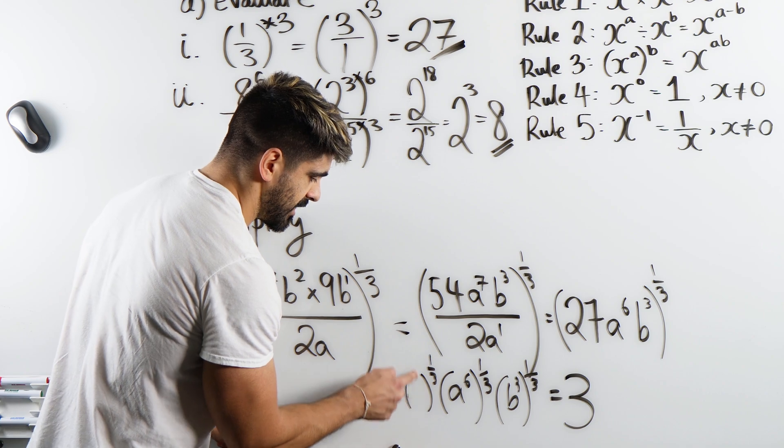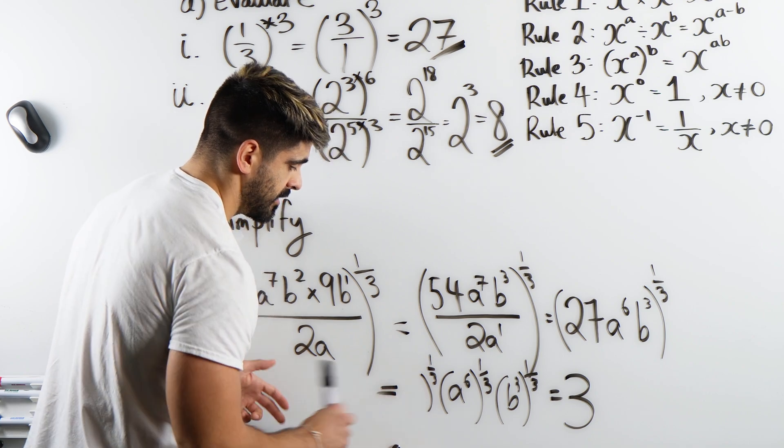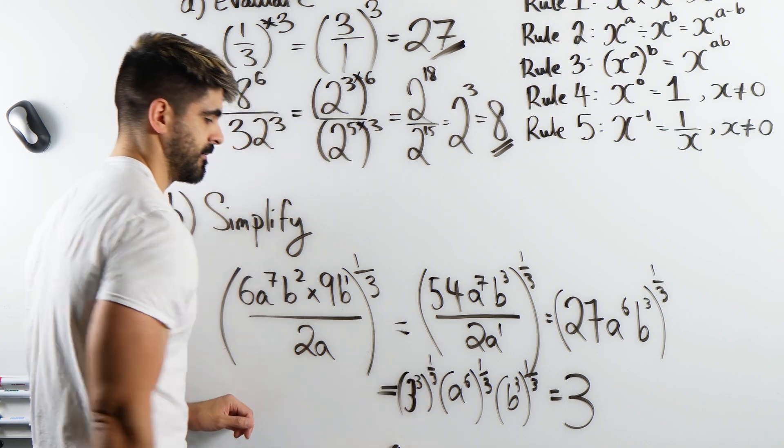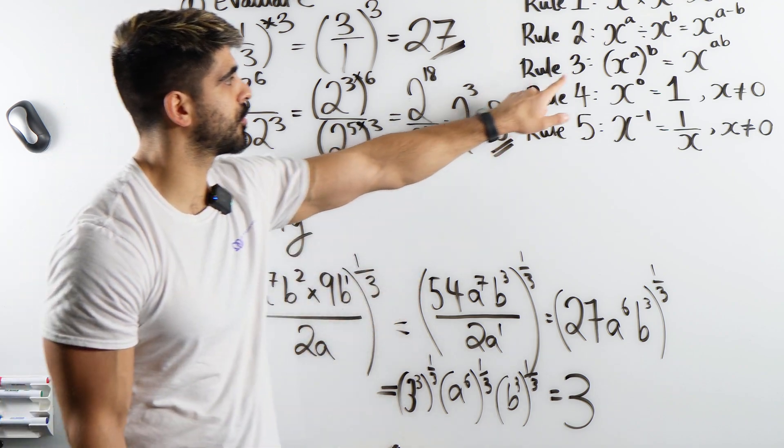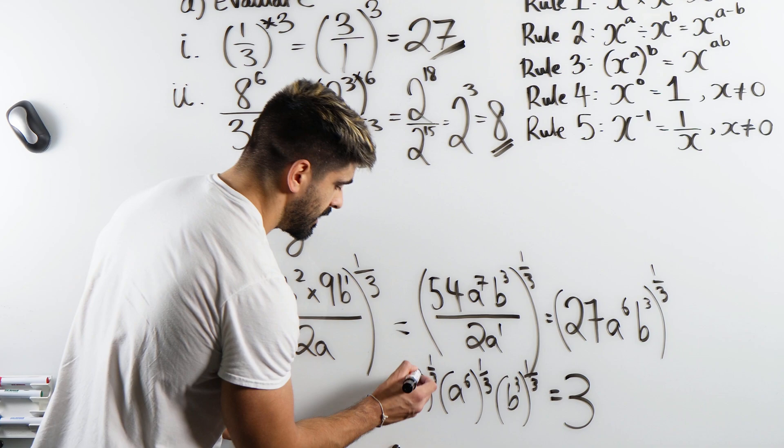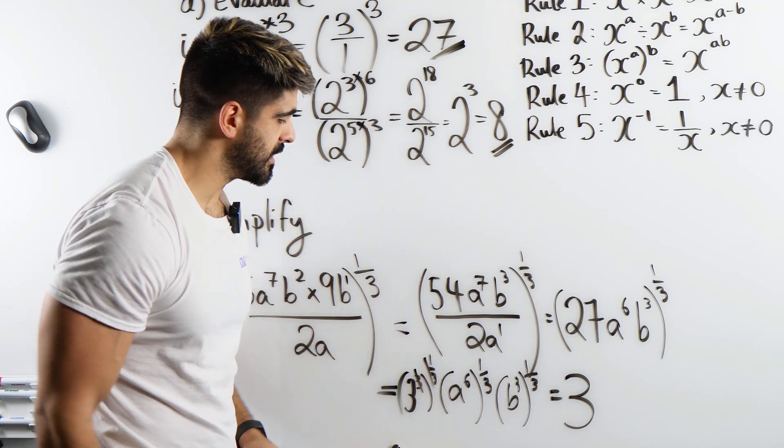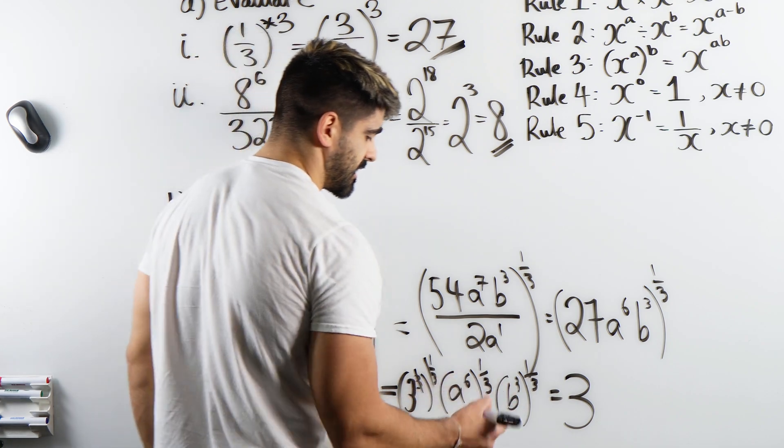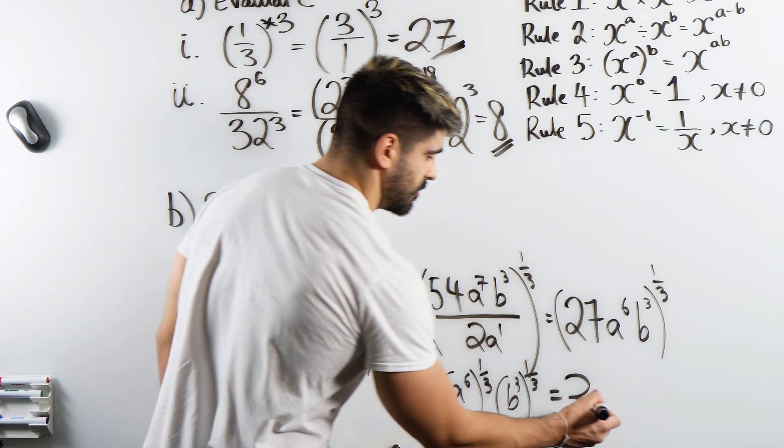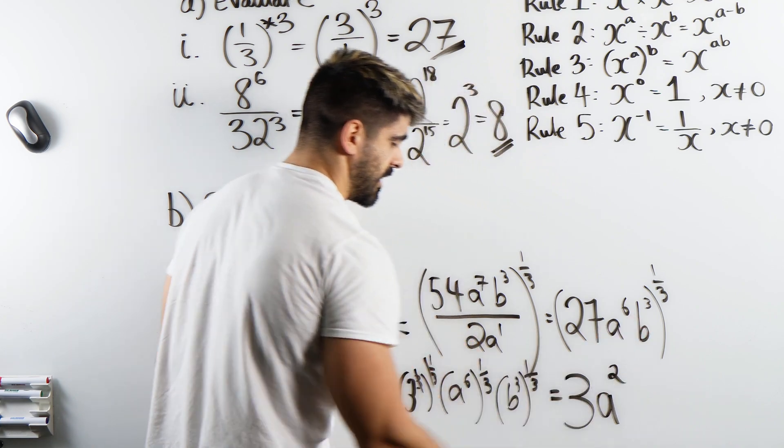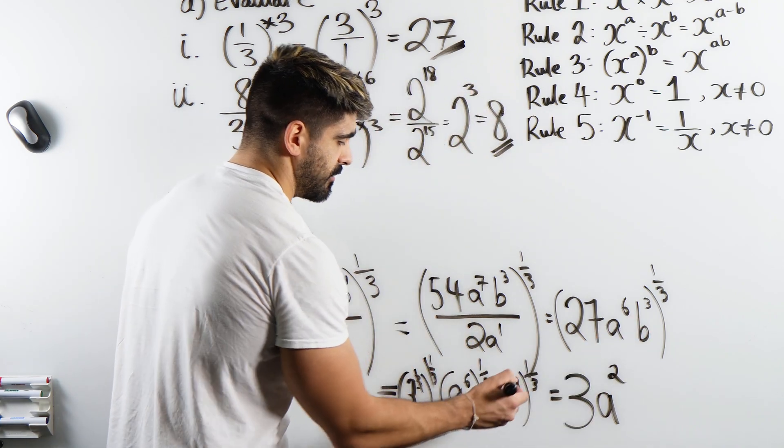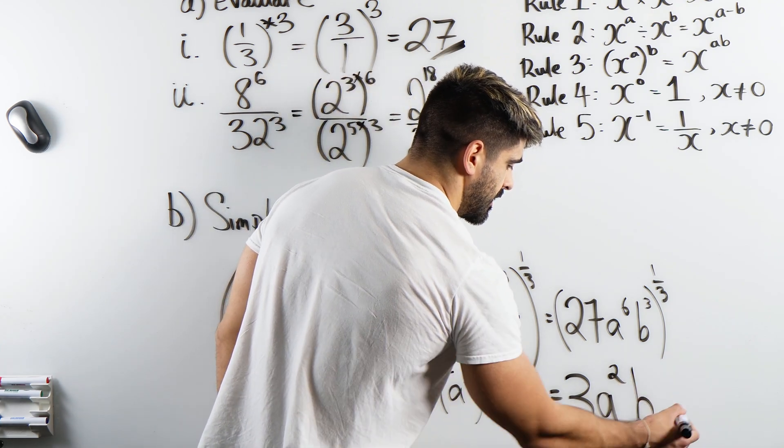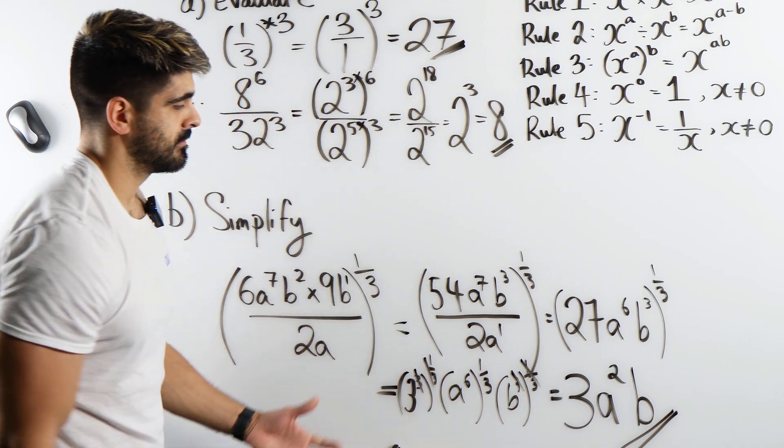You could have said, look, 27 is 3 cubed. Then look, you're just multiplying the powers. You have rule 3, you're just multiplying those powers. So, these cancel out. You're left with 3. We're going to multiply these powers by rule 3. 6 or a third of 6 is 2, so we have a squared. Then by the same argument, the 3's and the third cancels, we are left with b. And that is simplified.